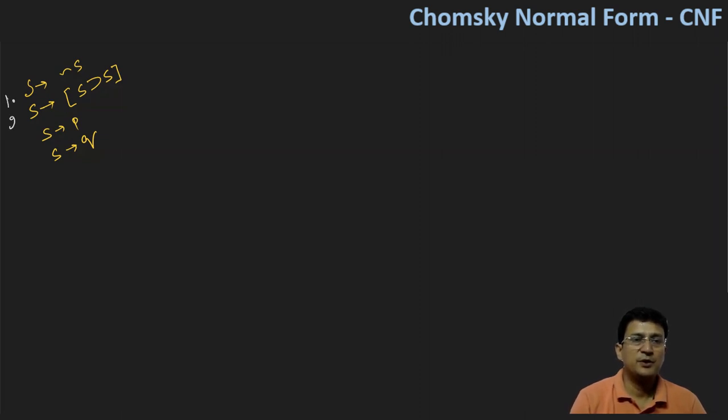So this is the first production, second, third and fourth. And then we are going to convert this to the Chomsky normal form.